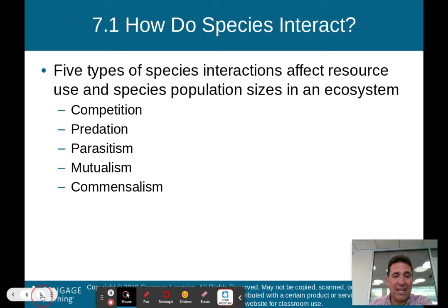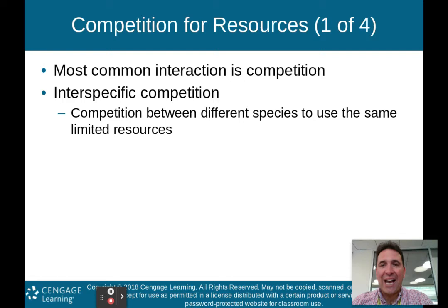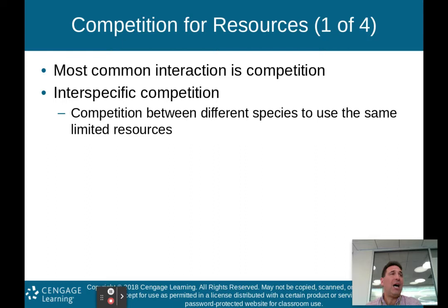Competition for resources is the most common interaction between species. We have a couple of different types of competition. One is interspecific competition — competition between different species that use the same limited resources. For example, human beings and lions both want to eat an antelope. Humans hunt the antelope, lions hunt the antelope — that is a form of interspecific competition.